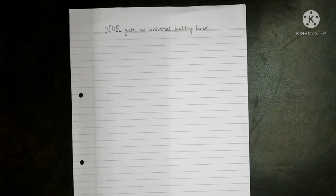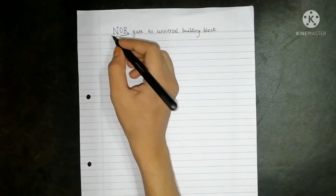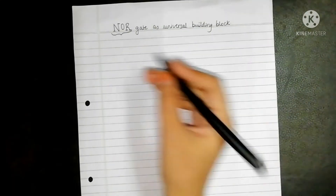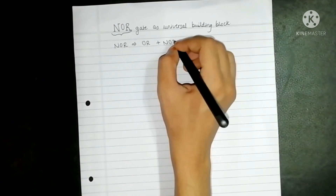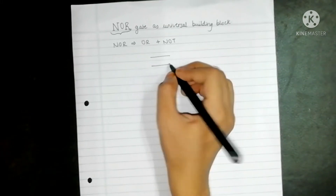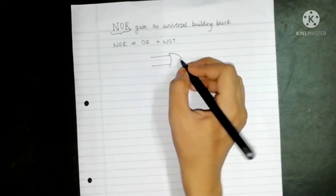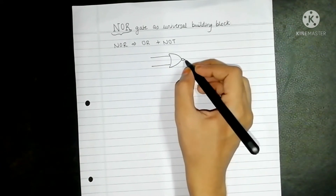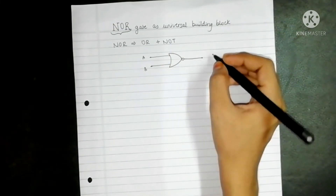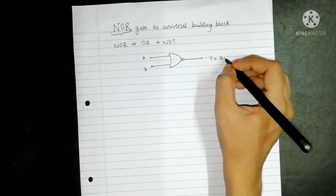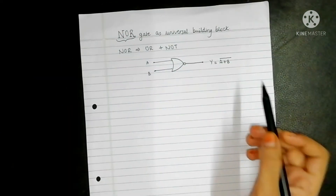NOR gate as universal building block. In the previous video we saw how different kinds of logical operations can be performed using NAND gate. Now here in this video we will see how NOR gate can be used to construct different logic gates. The NOR gate is an OR gate followed with a NOT gate. The symbolic representation shows two inputs A and B, and the output is A plus B, the whole bar.